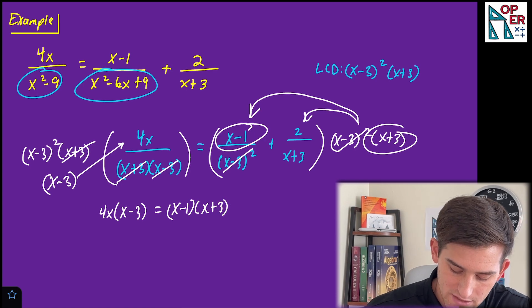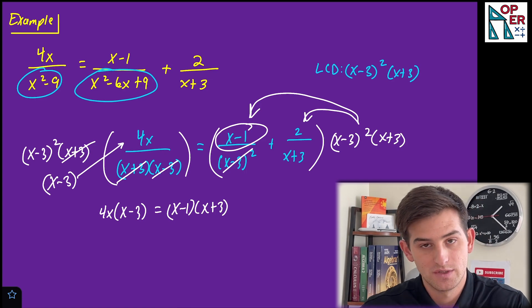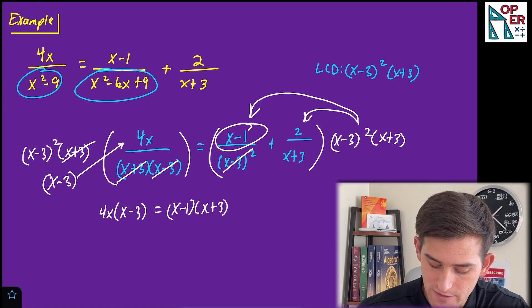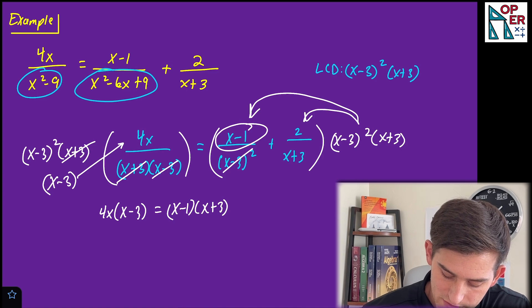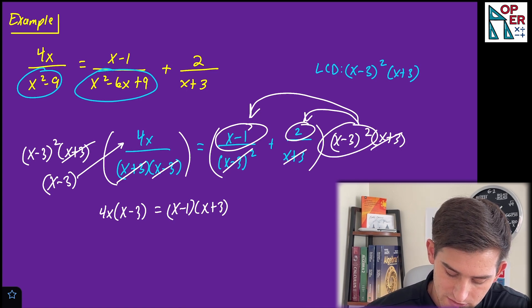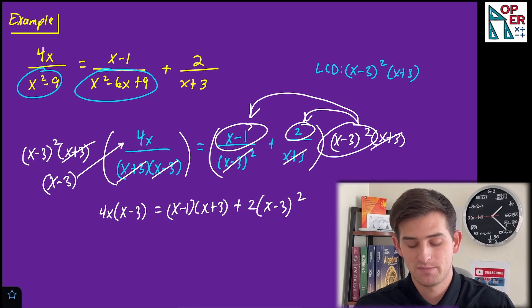Okay, now I'm gonna erase these markings here and now I want to use, once again, my least common denominator, but now let's multiply it by two over X plus three. So now we see X plus three, X plus three, that'll cancel. So we just multiply two times X minus three quantity squared. So plus two times X minus three quantity squared.